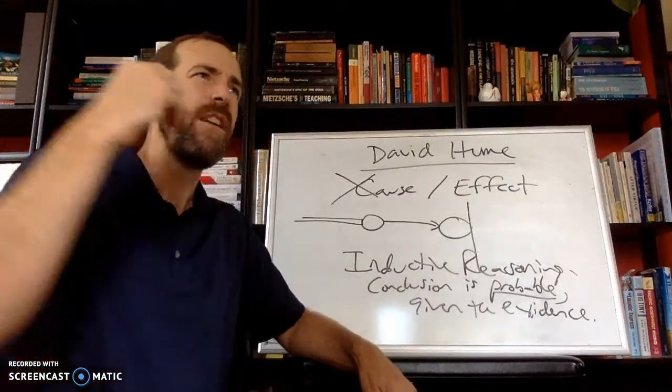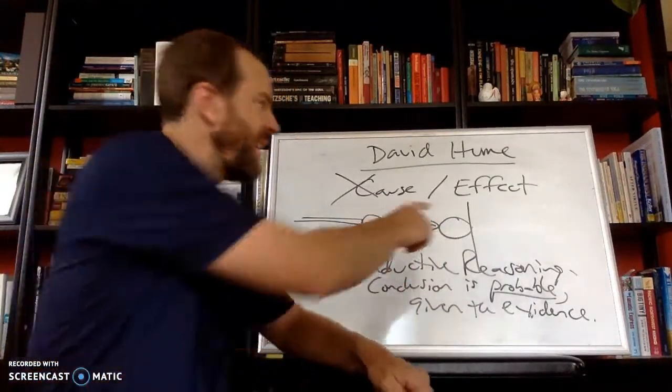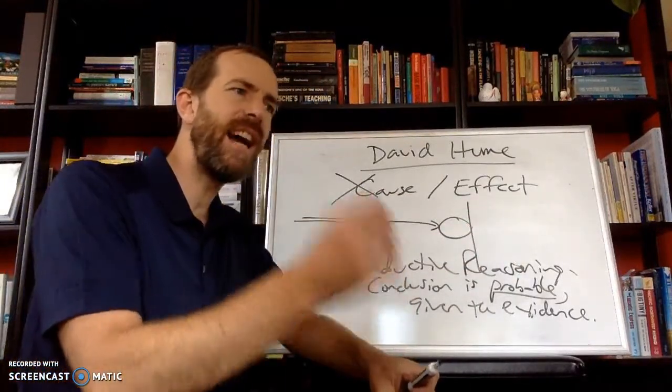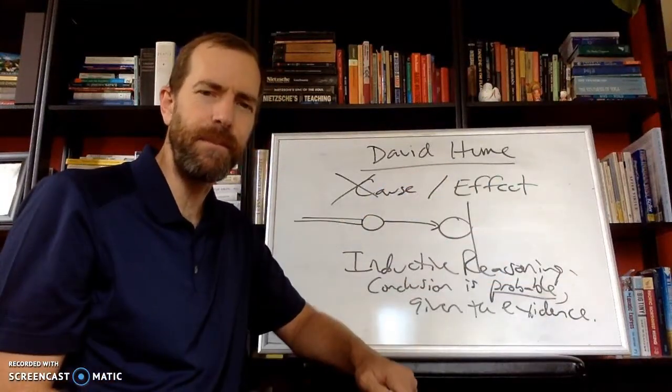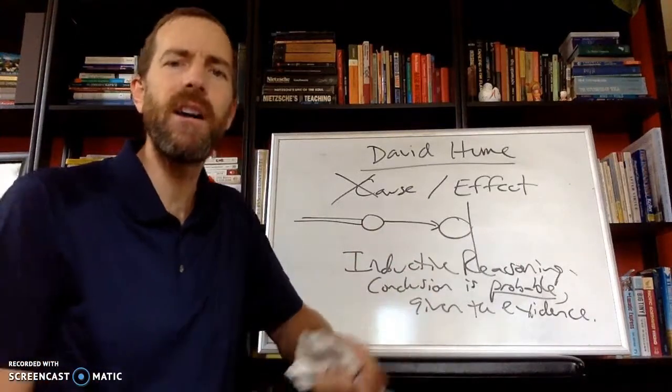We have a thousand cases of the cue ball touching the other ball and that ball then moving. We have a thousand cases built up making it seem highly probable that one causes the other. But all you would need is one counter example and the whole theory falls apart.